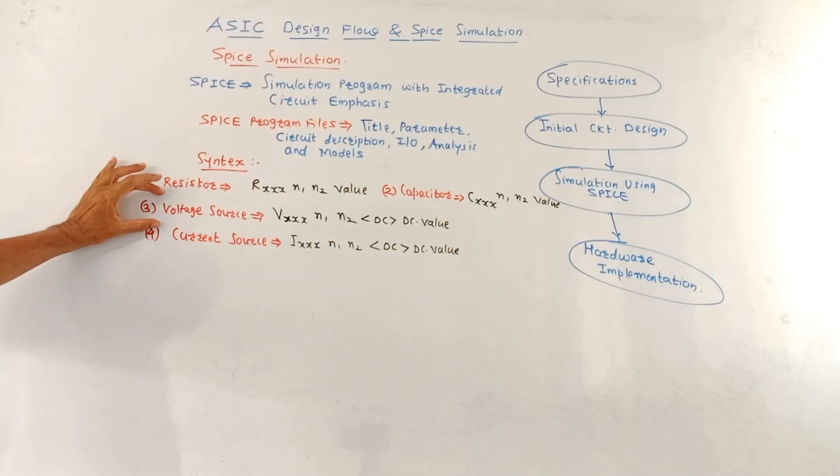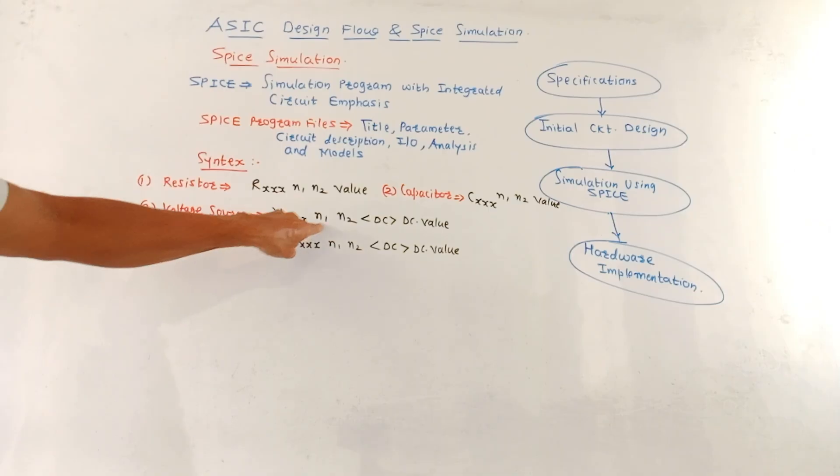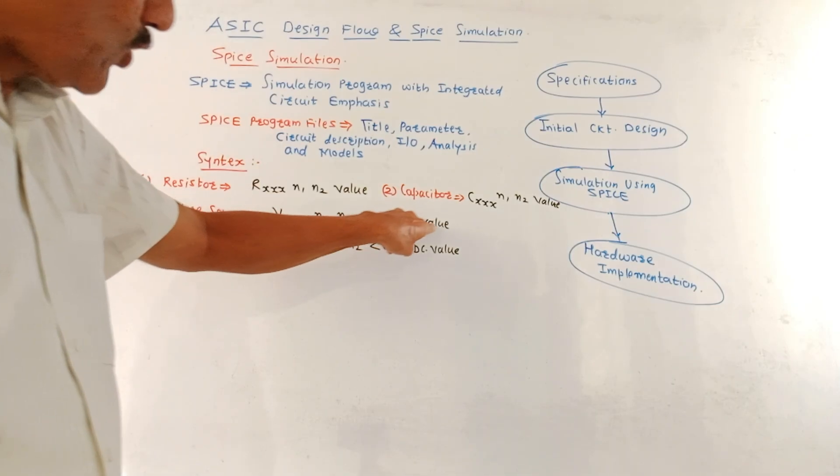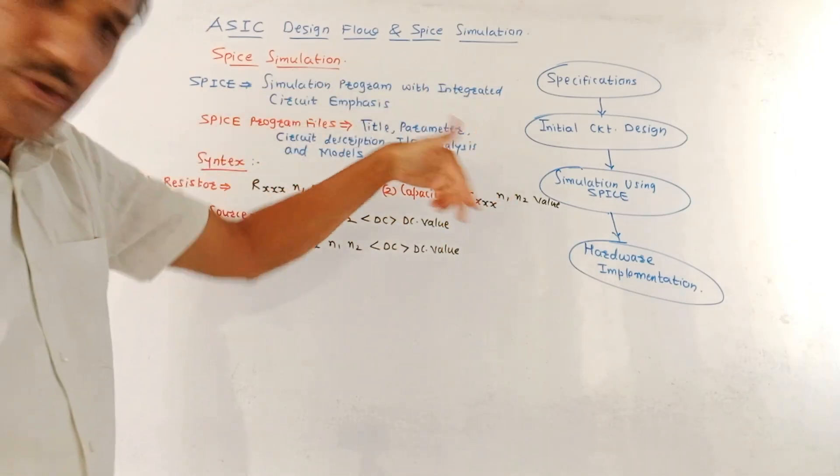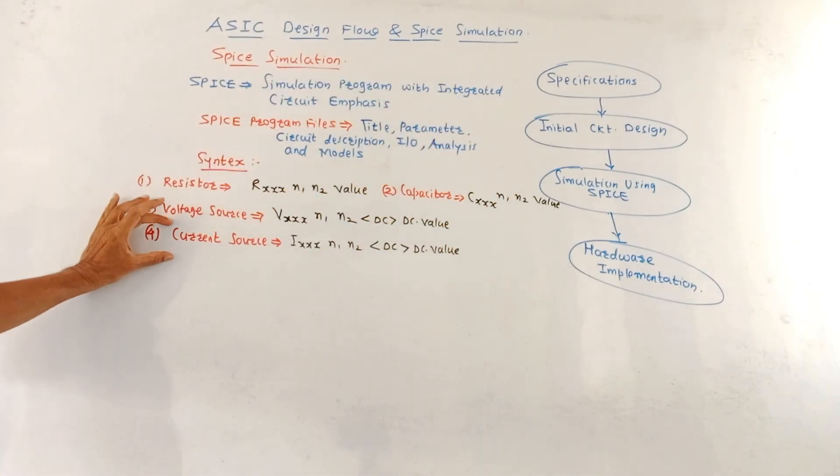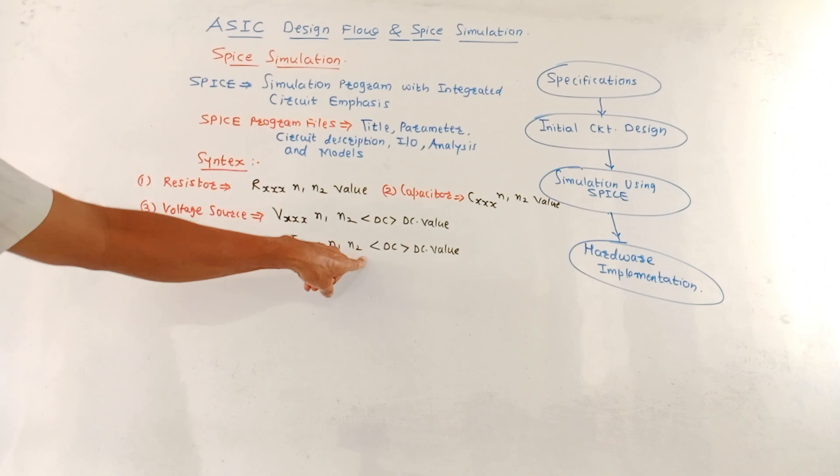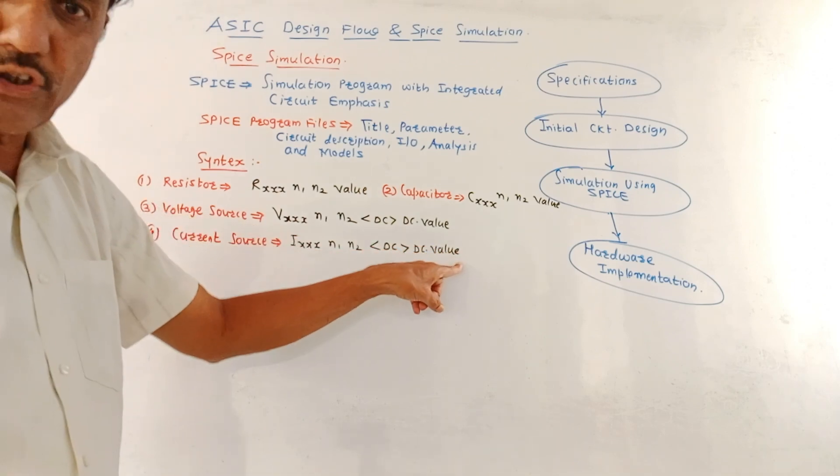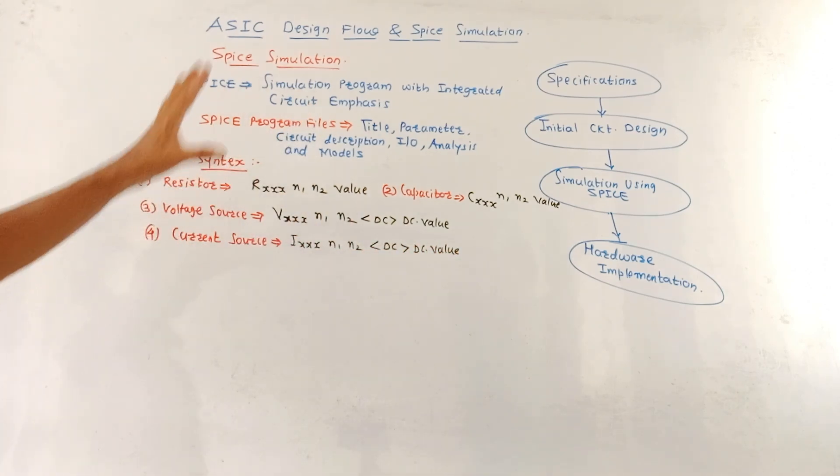Then for the voltage source, the DC voltage source, the syntax is Vxxx, N1, N2, again nodes, DC and DC value. That means DC 5 volt and so on. Then same syntax is applicable for current source. It is Ixxx, then N1, N2, DC and DC value. So this is about the flow graph for SPICE simulation.